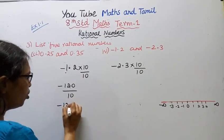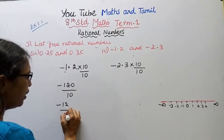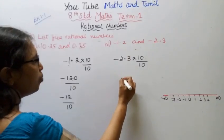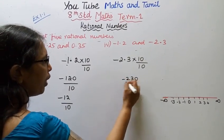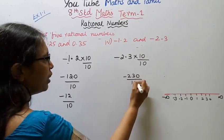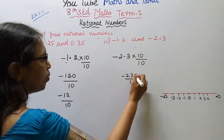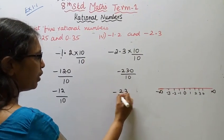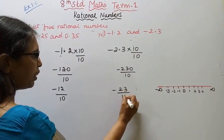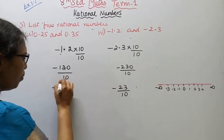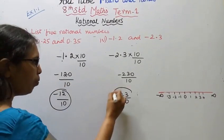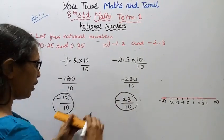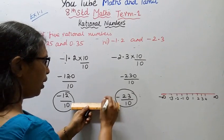We have minus 12 by 10. Similarly, minus 2.3 multiplied by 10 gives minus 23 by 10. So now we need to find five rational numbers between minus 12 by 10 and minus 23 by 10.